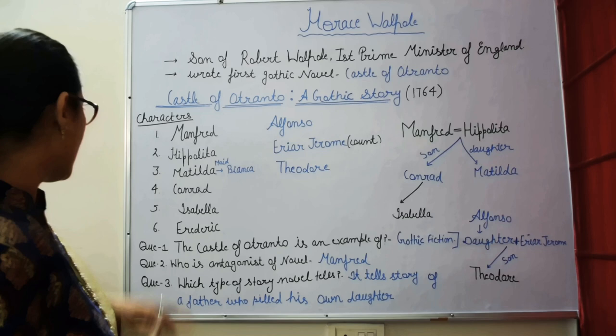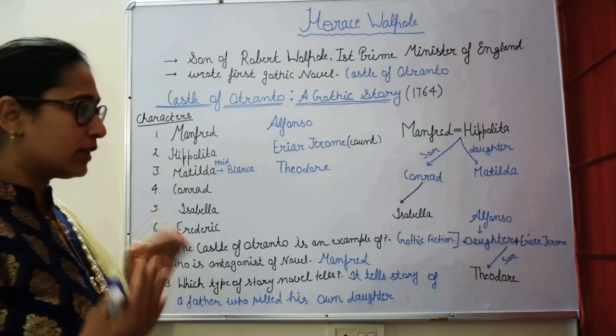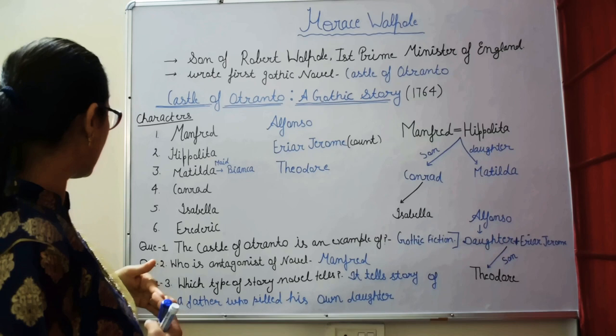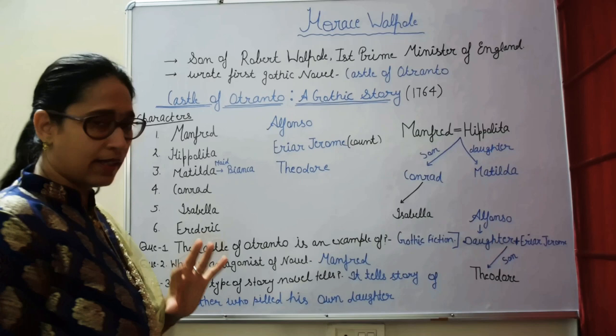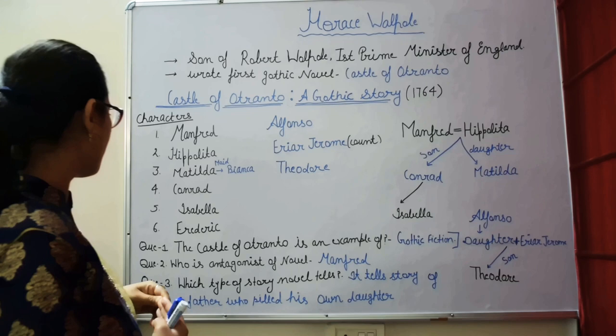After Conrad's death, Manfred is deeply worried. There is a prophecy that says Manfred's castle will be lost when he no longer has a male heir or when the true line asserts itself.